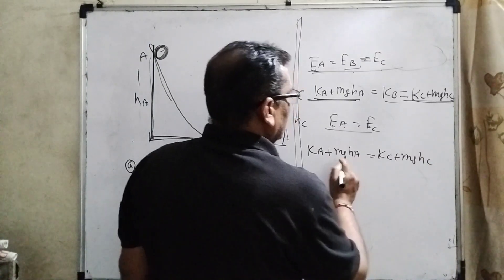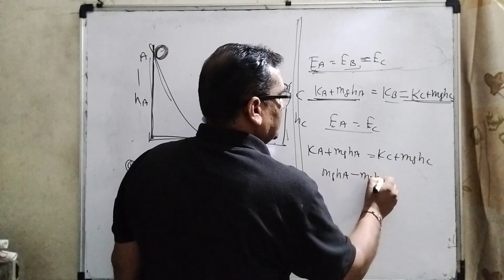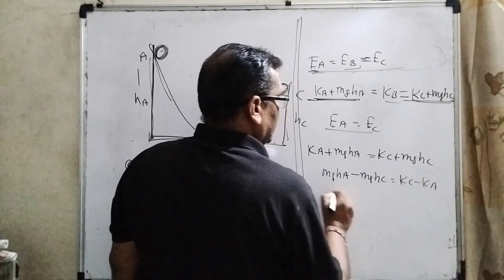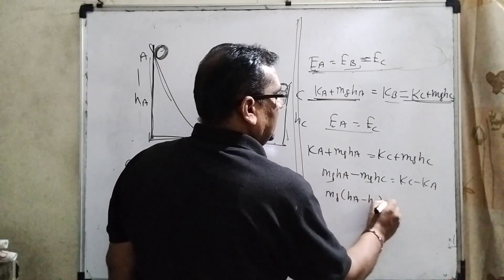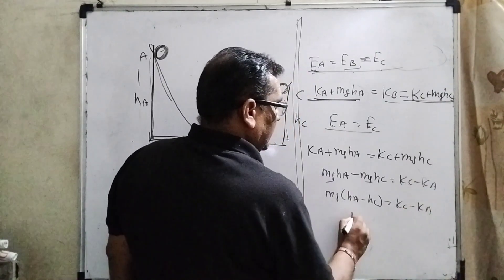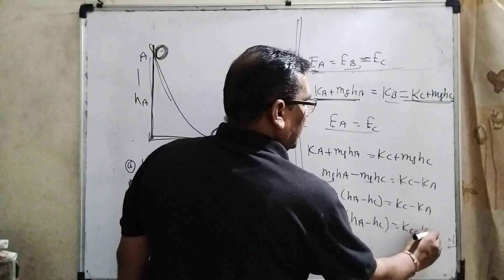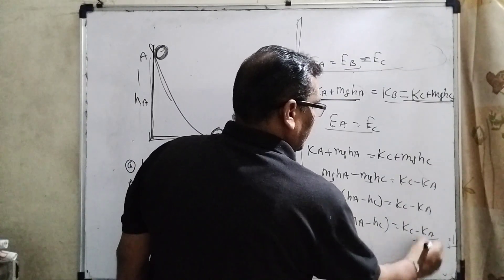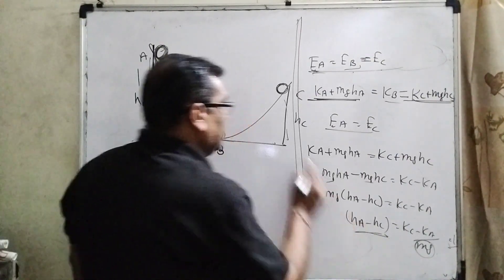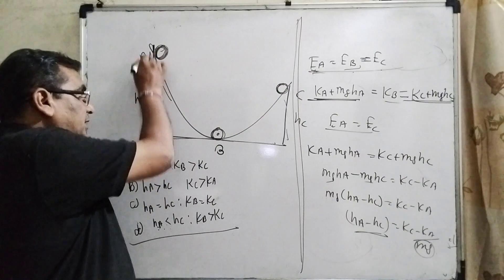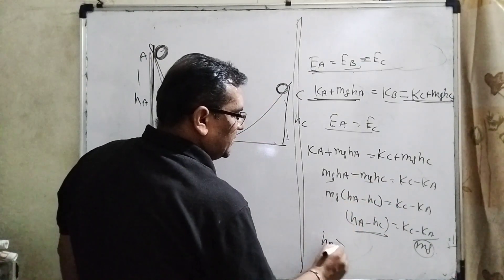Here, KA plus MGHA equals KC plus MGHC. Now, MGHA minus MGHC equals KC minus KA. Taking MG common: MG(HA minus HC) equals KC minus KA. Here you can see that MG is constant because it's the same object. In the diagram, this height HA is greater than HC and it is in equal proportion. It means HA is greater than HC.